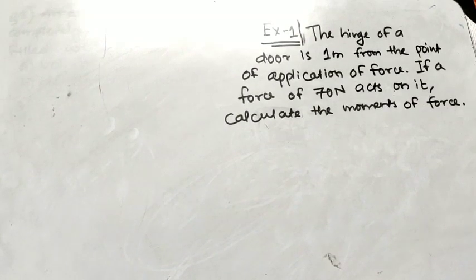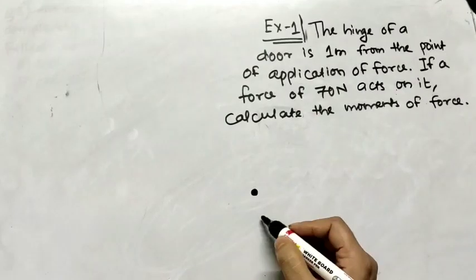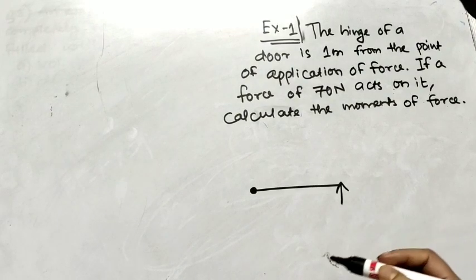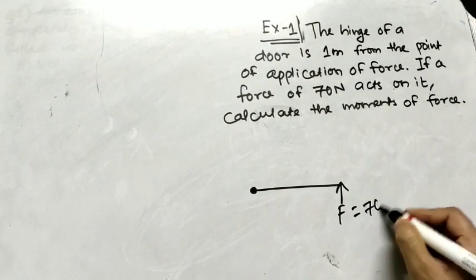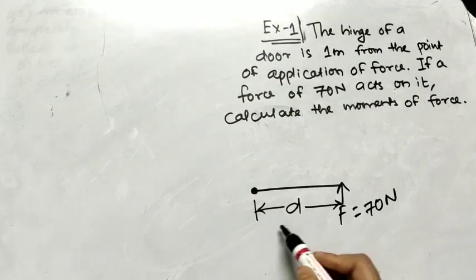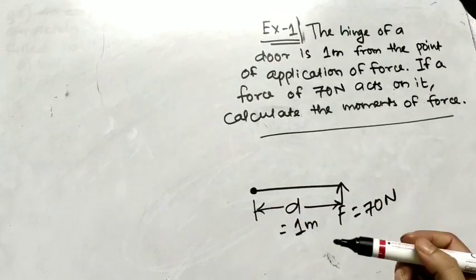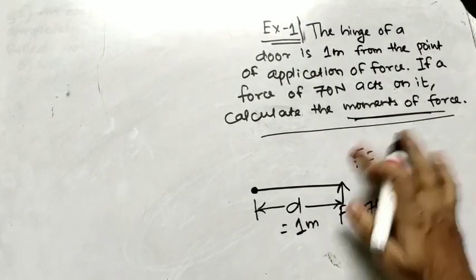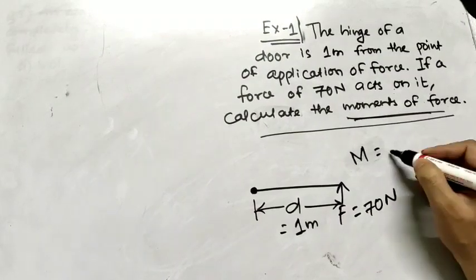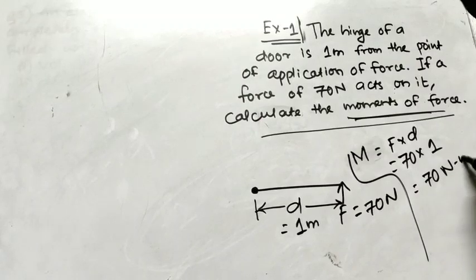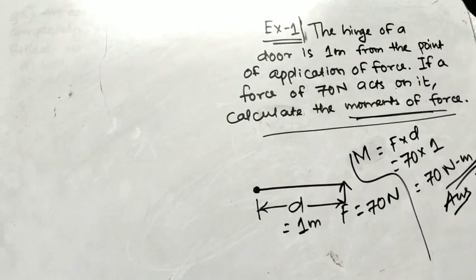Numerical problem: The hinge of a door is 1 meter from the point of application of force. Force applied F = 70 Newton, and distance d = 1 meter. Moment of force = F × d = 70 × 1 = 70 Newton·meter. That is your answer.